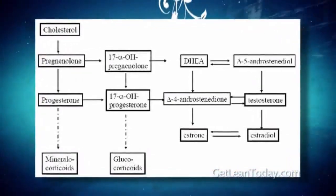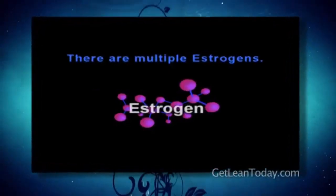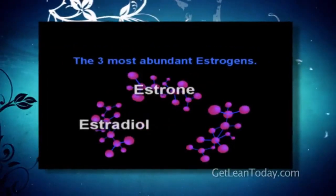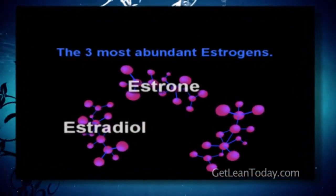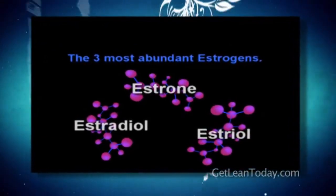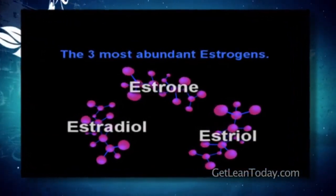Pregnenolone is also converted into DHEA and to a different kind of estrogen in this pathway. Estrogen is the name of a class of hormones. There are actually three types of estrogens: estrone, which is E1; estradiol — diol means 2, so E2; and estriol, which is tri, meaning 3, so E3. So you have estrone, estradiol, and estriol — three different types of estrogen produced in the body.